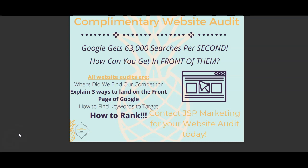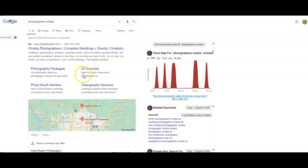We want to talk about how you can get in front of some of those people who are searching through Google. So here we are at the website audit, and what we want to do is talk about how do we find our competitors, explain three ways that you can also be landing on the front page of Google for different keywords, talk about which keywords we want to be targeting, and then overall, how do you get your website to rank and perform.